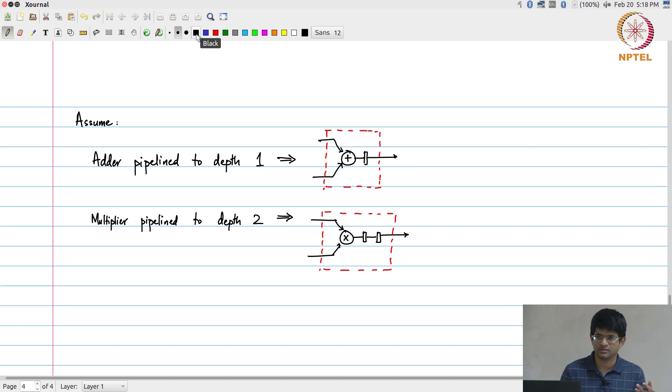As far as the outside world is concerned, I don't care how the internal implementation of the pipeline multiplier is. All that I care about is after I give an input, a pair of inputs, it takes two clock cycles before the corresponding output is generated. But on the very next clock cycle I can give the next set of inputs and I will get the corresponding outputs two cycles later.